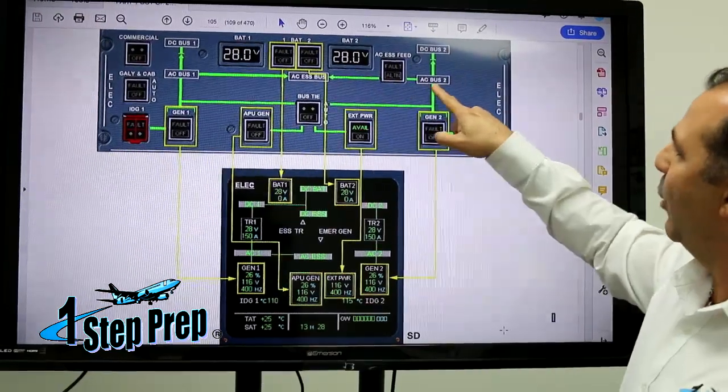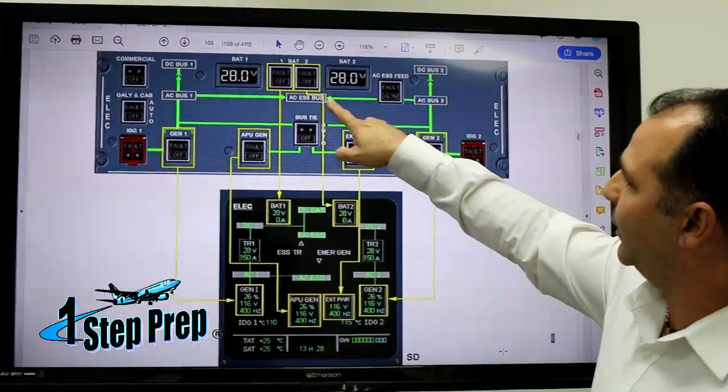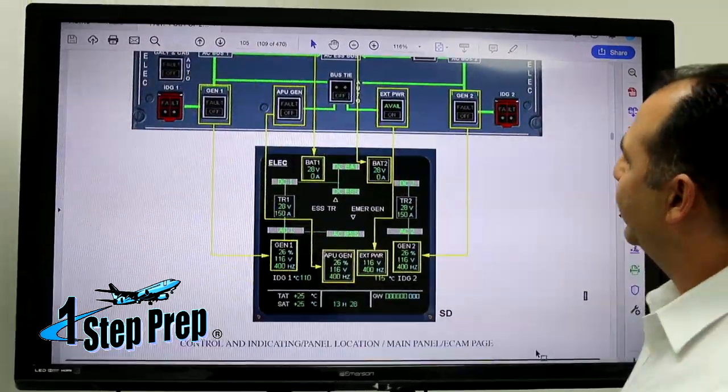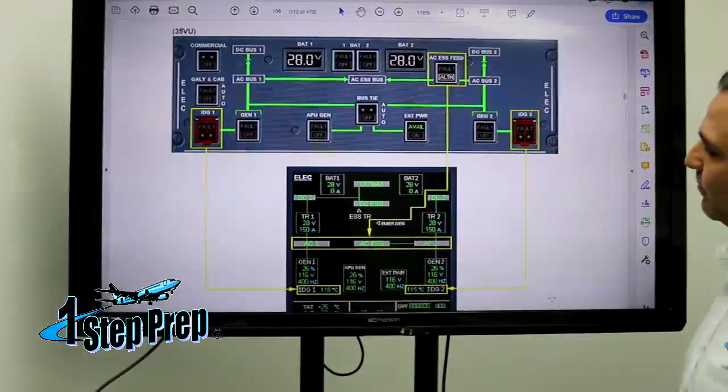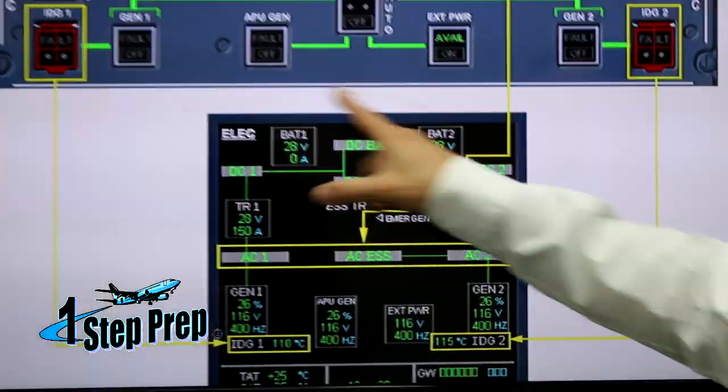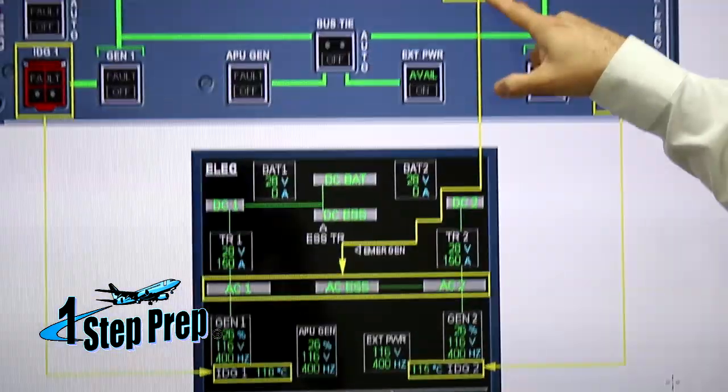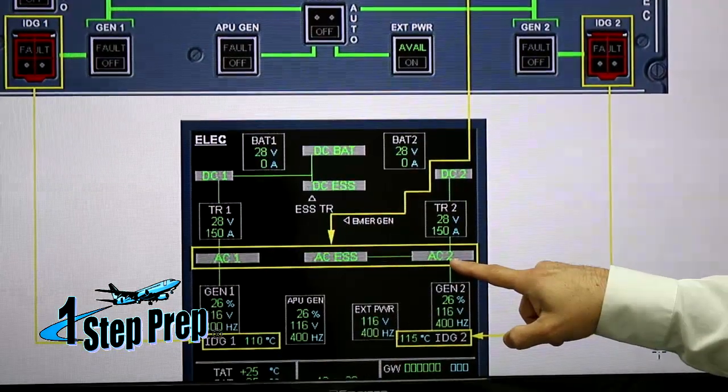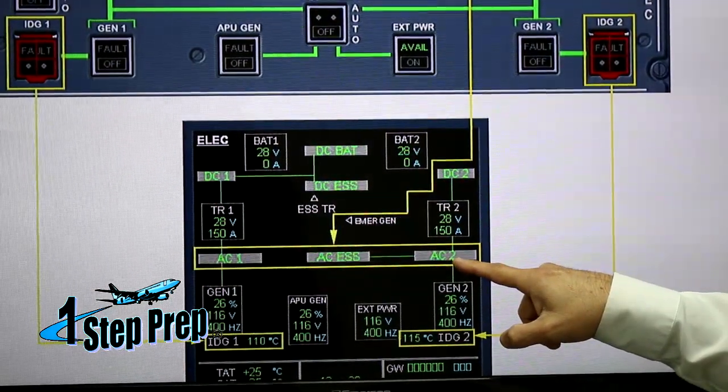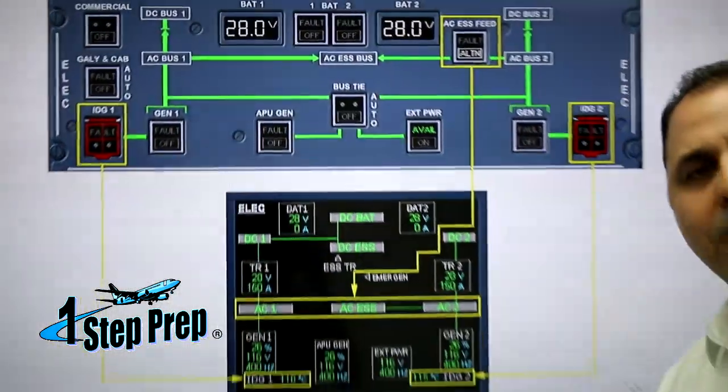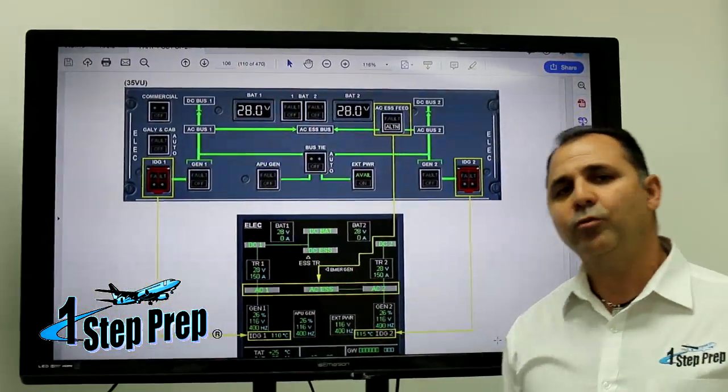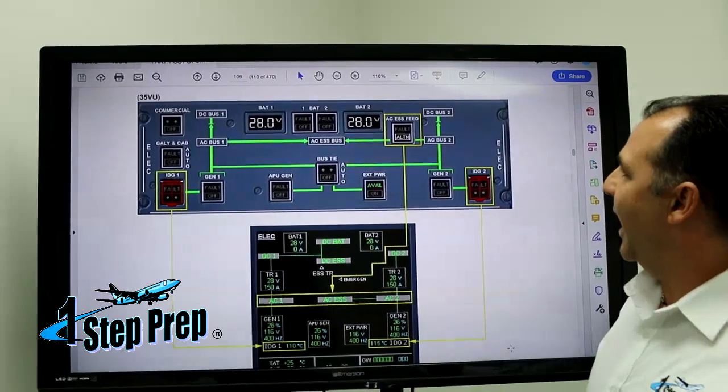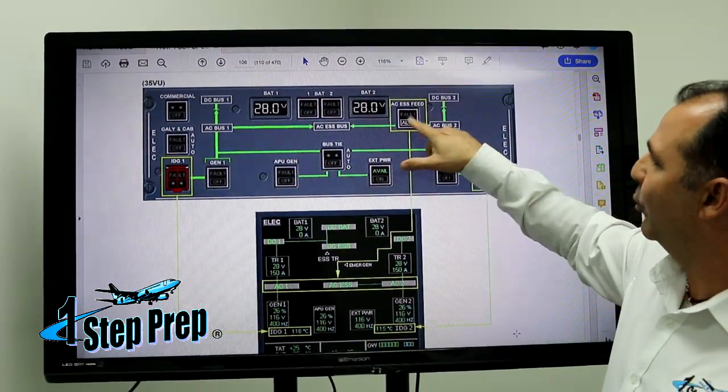Now AC Bus 2 is going to be powering AC Essential Bus. If we go to the following diagram here, on the ECAM electrical page once I go into the alternate mode, AC Essential Bus is going to be powered by AC Bus number two. This is the backup, so normally AC Essential Bus is powered by AC Bus 1, and the backup power will be AC Bus 2 when we press the AC Essential Feed button to the alternate mode.